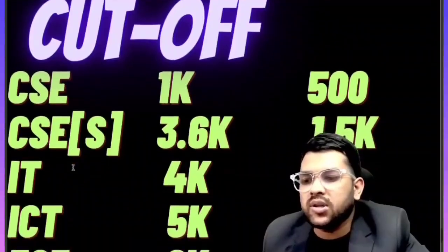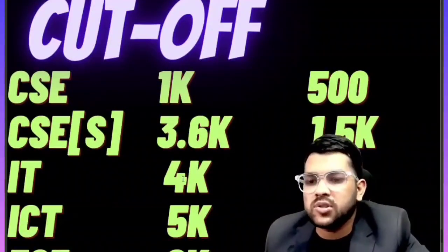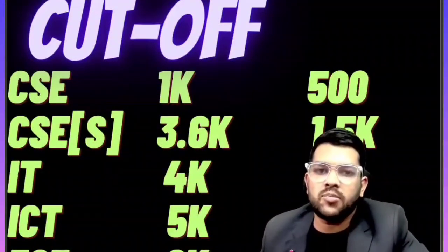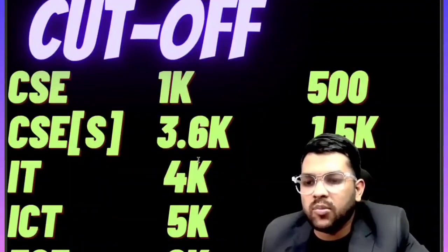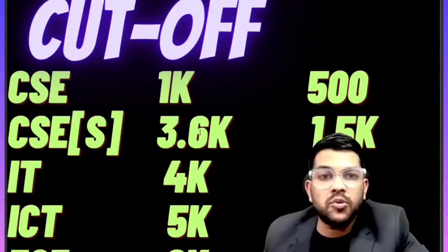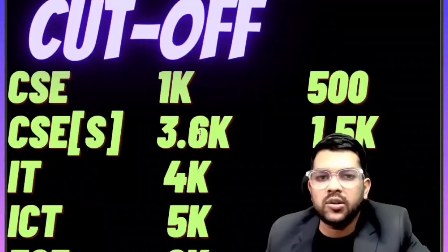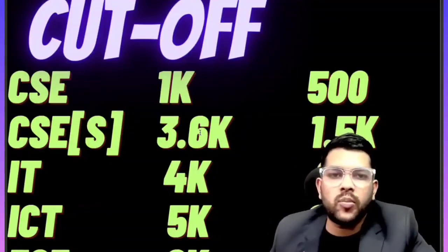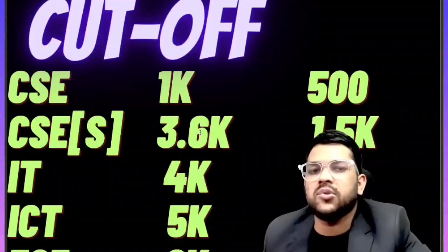For CSA specialization, three point six thousand rank. The first column is for stream one, the second column is for stream two. There are lots of branches available — up to 3,600 rank you will get CSA specialization if you do better counseling. If you make a little mistake, others will get the benefit. So if you do better counseling up to the last round, you will certainly get up to this rank.